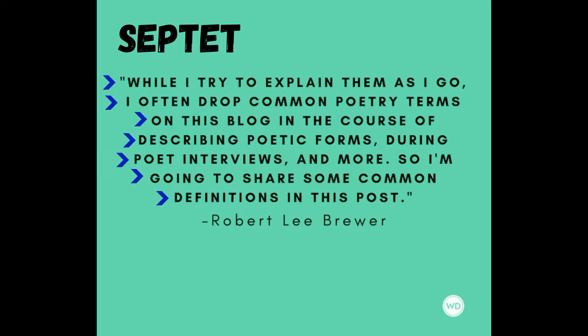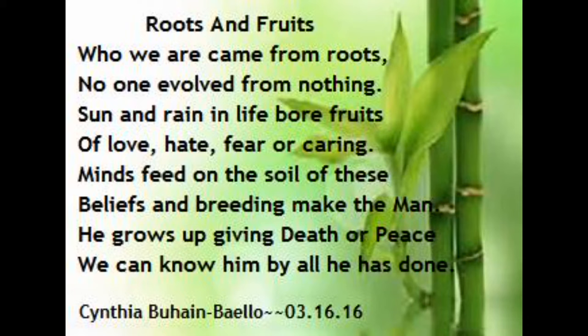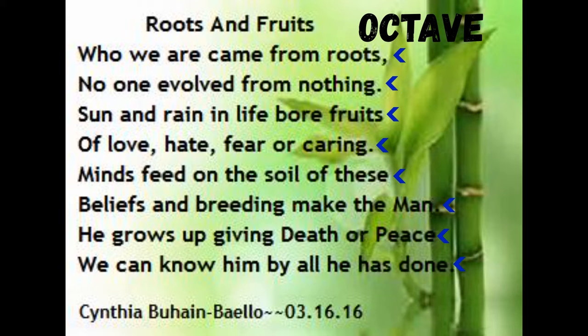Basically speaking, in poetry a septet is a poem consisting of seven lines, and of any form or meter. An octave is a set of eight lines of poetry. Simply, octave can be used to refer to any eight lines of poetry that make a poem or a specific stanza, rhymed or unrhymed, following a specific meter or not.